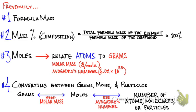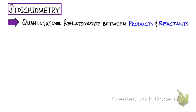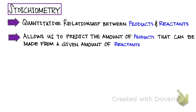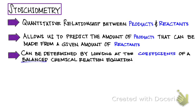Finally, you learned how to apply the mole concept in converting between mass, moles, and number of atoms, molecules, or particles. Today you will learn about stoichiometry, which is the main goal and the heart of this chapter. By definition, stoichiometry is the quantitative relationship between the products and the reactants based on a balanced chemical reaction equation. It allows us to predict the total amount of products that can be made from a given amount of reactants. This quantitative relationship can be determined simply by looking at the coefficients of a balanced chemical reaction equation.